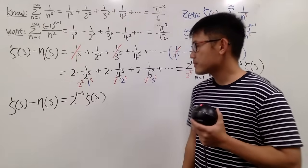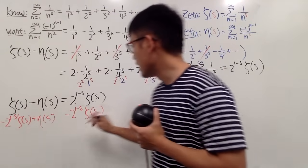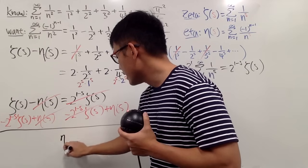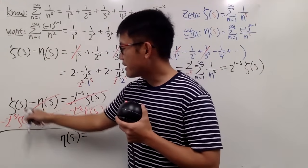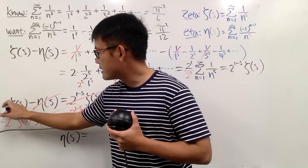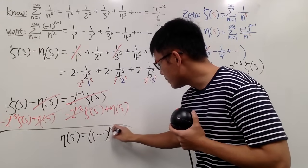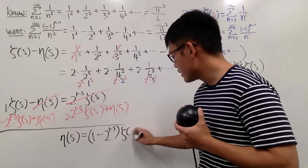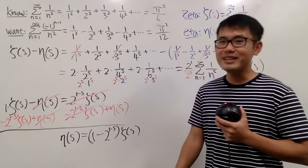Now I want to isolate eta, because that's what we want to solve for. We have theta of s minus eta of s equals 2 to the 1 minus s times theta of s. Subtract the 2 to the 1 minus s times theta from the left, and add eta of s on both sides. So eta of s equals — factoring theta out from the left — 1 minus 2 to the 1 minus s, times theta of s. This is a beautiful connection between eta and theta.